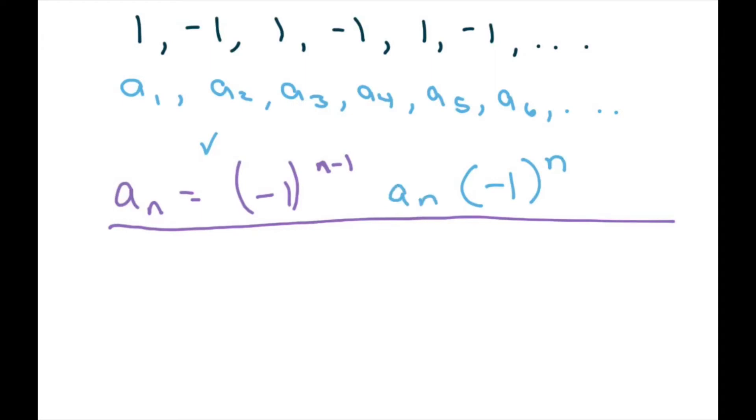So let's test a sub one. If I plug in one, a sub one equals negative one to the one minus one, I get negative one to the zero. Well, anything to the zero equals one. So the one we want to use is this one. Because we're starting at a positive one. If we started at negative one, we would want to use this one.